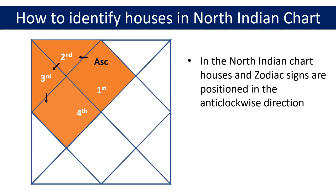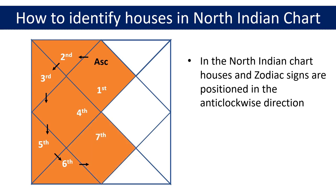Continuing on the same way we get to the fifth house, which is the triangle adjacent to the fourth house. The sixth house is again a triangle adjacent to the fifth house at the bottom of the chart. Moving forward, the seventh house is the diamond shaped rectangle highlighted in the chart — you will always find the seventh house in this position. Continuing in the anti-clockwise direction we come to the eighth house, which is a triangle adjacent to the seventh house near the bottom of the chart.